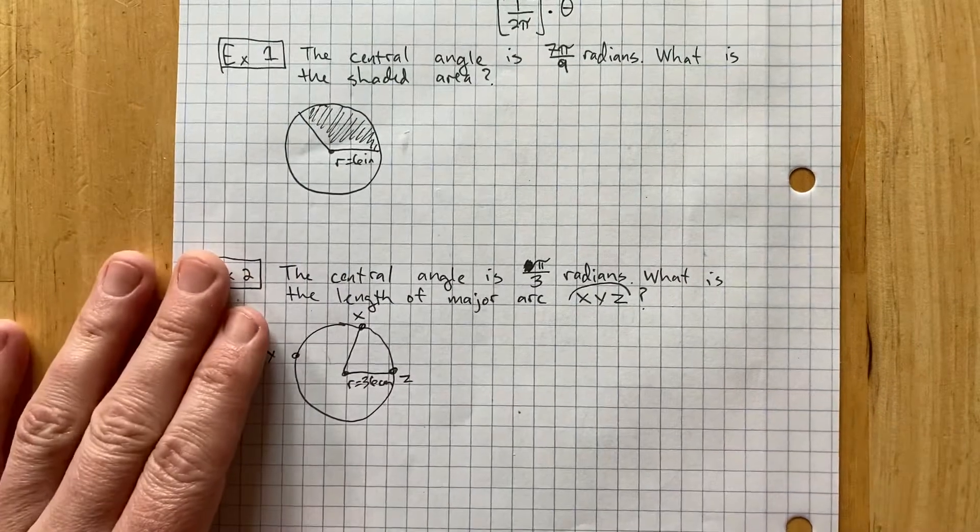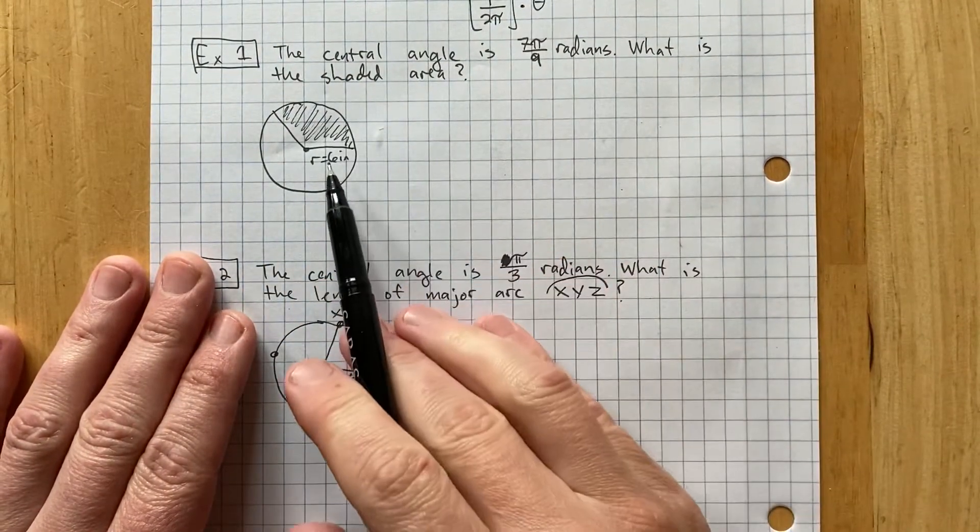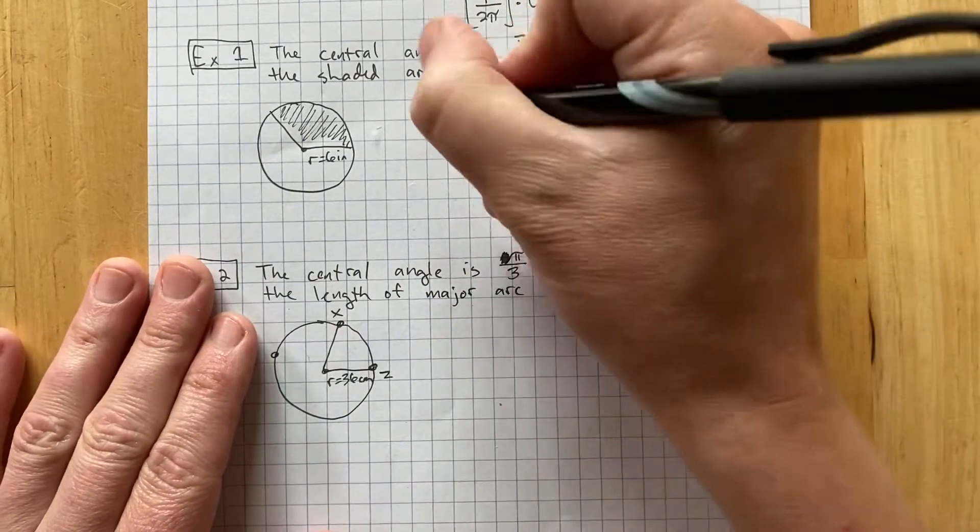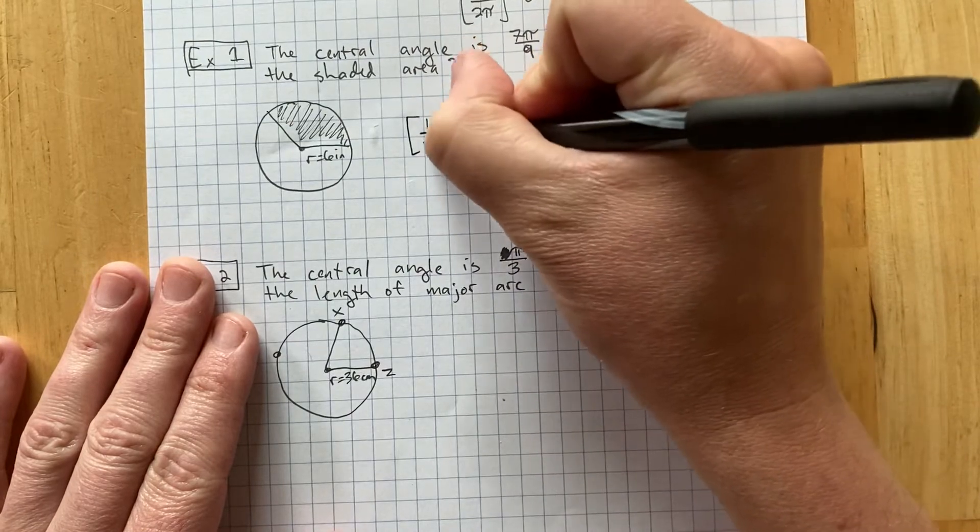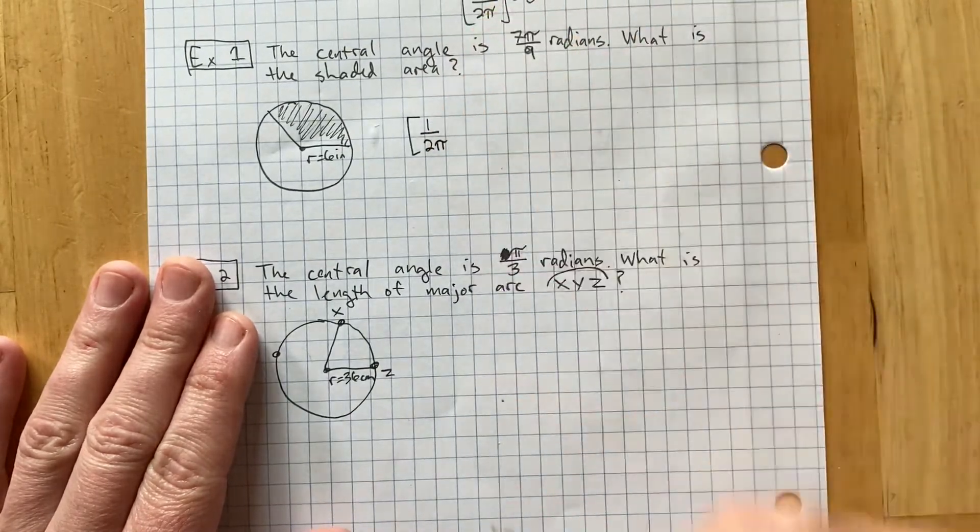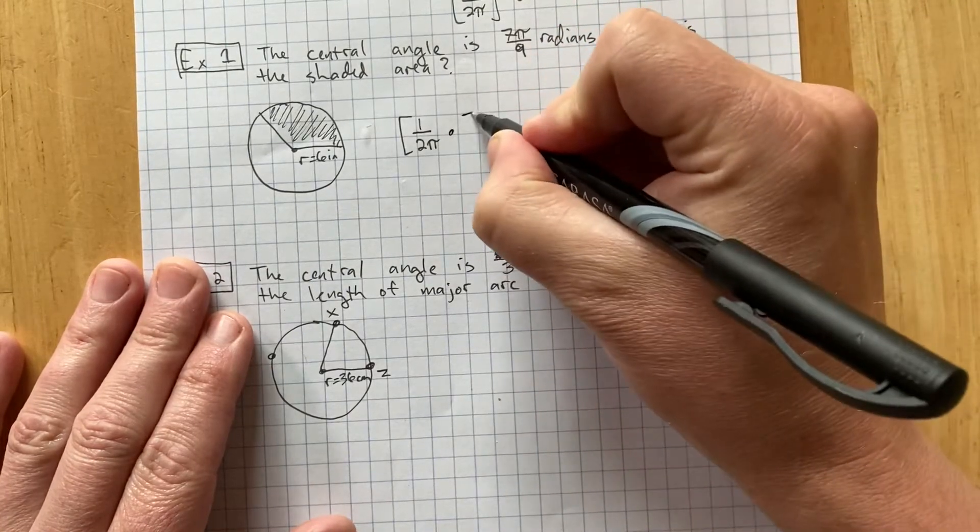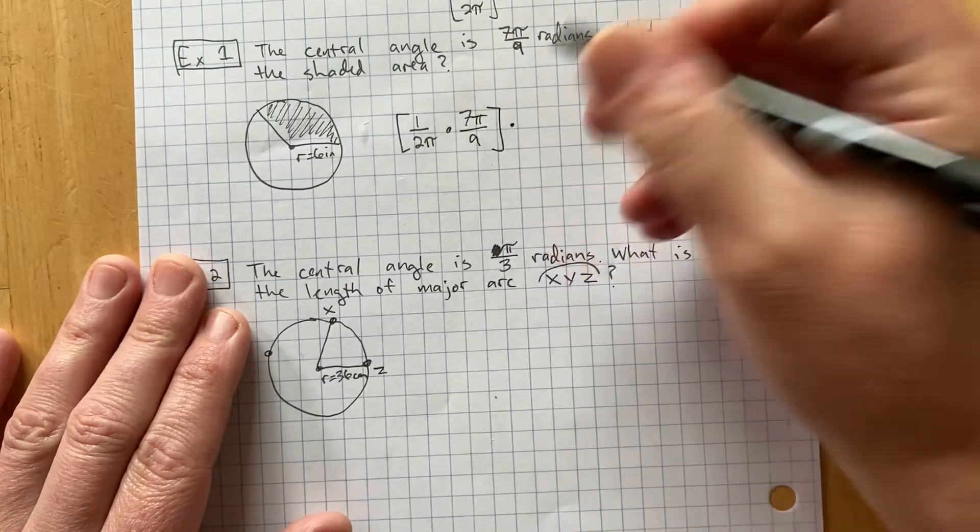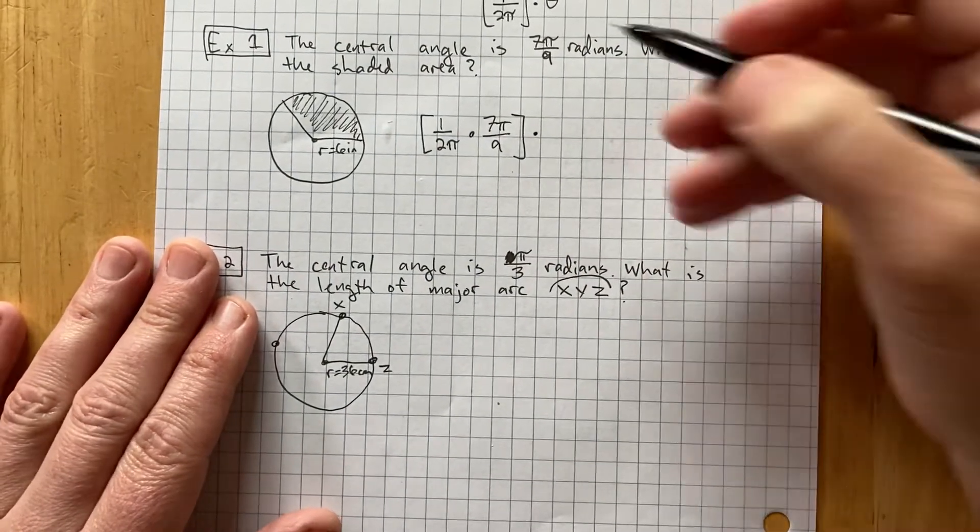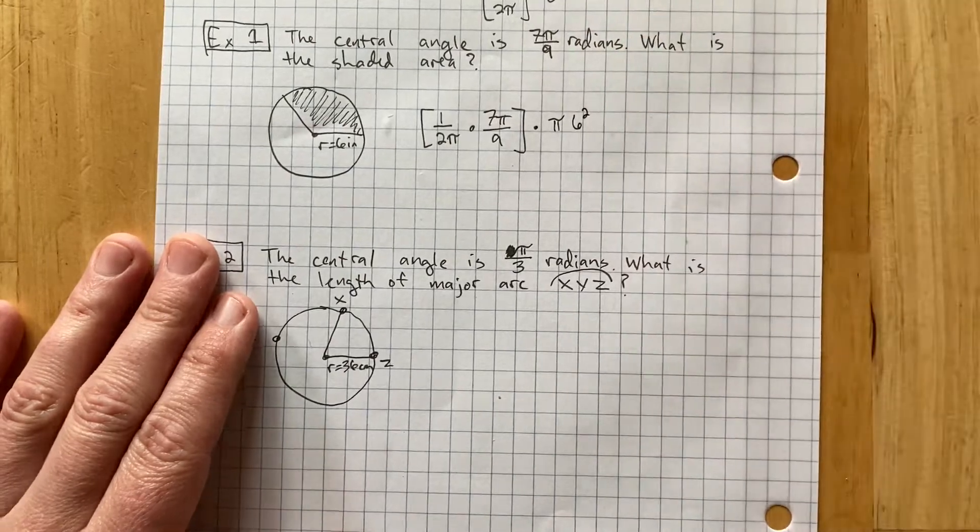So, example 1. It says the central angle is 7 pi over 9 radians. What's the shaded area? We know the radius is 6. So, I'm just going to do like I wrote here. I'm going to write 1 over 2 pi. That's divided by 360. That's the same thing. But then I'm going to multiply that by 7 pi over 9. And then I'm supposed to multiply that entire fraction of the circle by pi times the radius squared. The radius is 6.